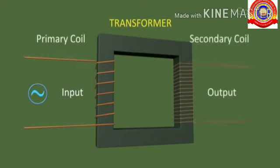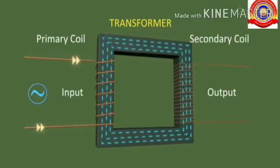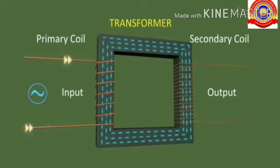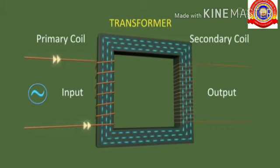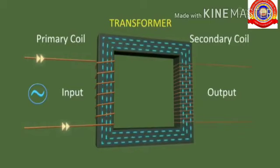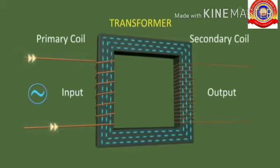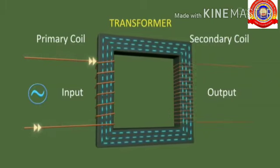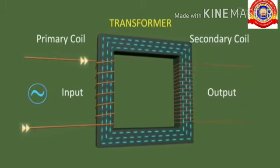The EMF in each turn of the primary and the secondary coils will be the same. The induced EMF in the secondary, Vs, is equal to the number of turns in the secondary multiplied by the EMF produced per turn. Hence Vs, the voltage in the secondary, changes in accordance with the number of turns in the secondary. The voltage in the secondary and primary will be in the same proportion as the ratio between the number of turns of the secondary and primary.